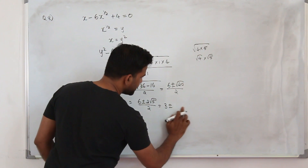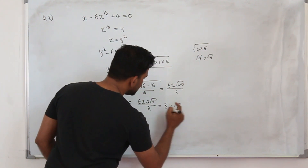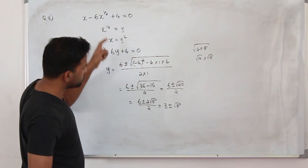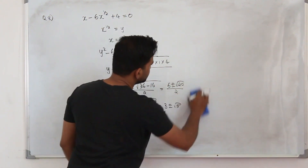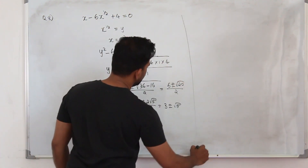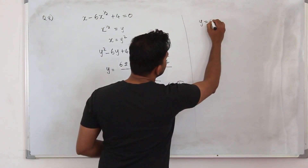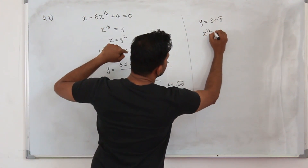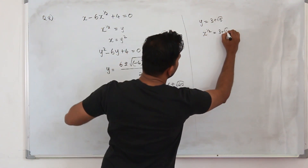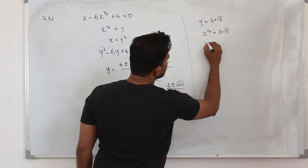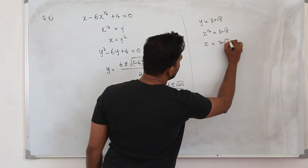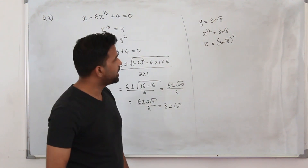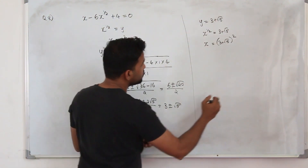So it will be 3 plus or minus root 5, because the 2 cancels. You have two y values. Replace y by x to the power half. For the first y value, x to the power half equals 3 plus root 5. Square both sides, so x equals 3 plus root 5, the whole squared.